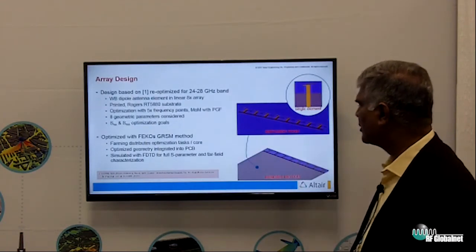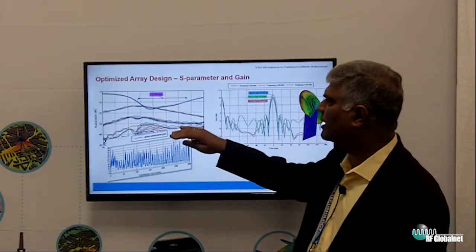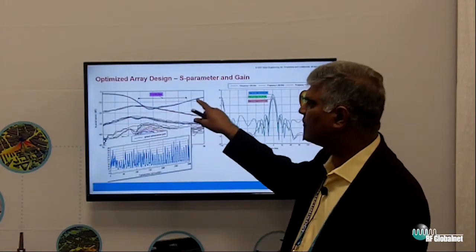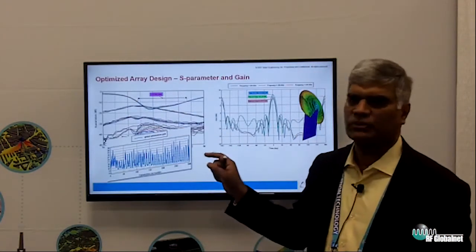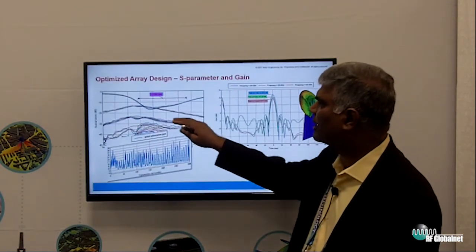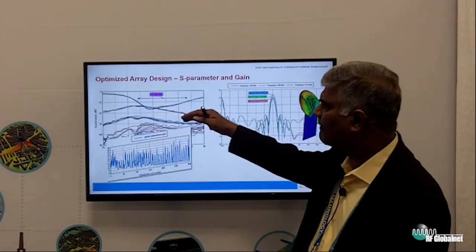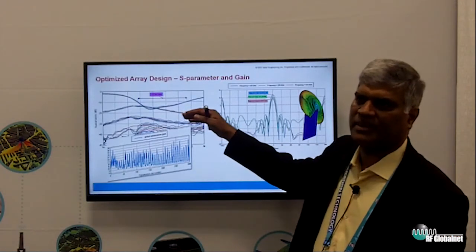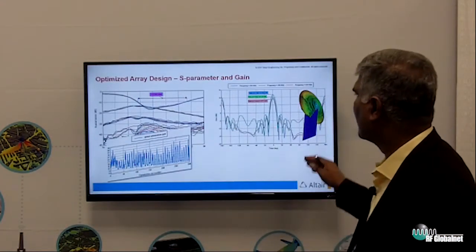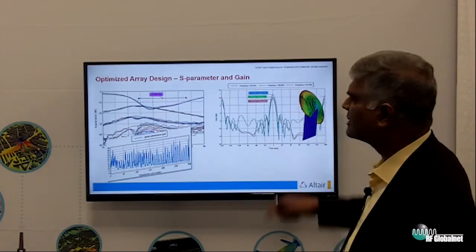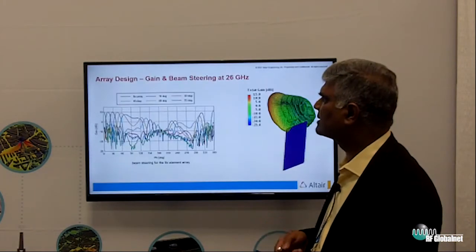Now we can integrate that into PCB. Once we integrate that into PCB and look at the S-parameters—this is the self impedance or self S-parameters, S11, S12, S13, S14, S44—you can see that all four agree very well. The isolation, which is also a very important aspect for MIMO antenna design, is also quite low here. This shows at various frequencies different gains based on the antenna tuning.